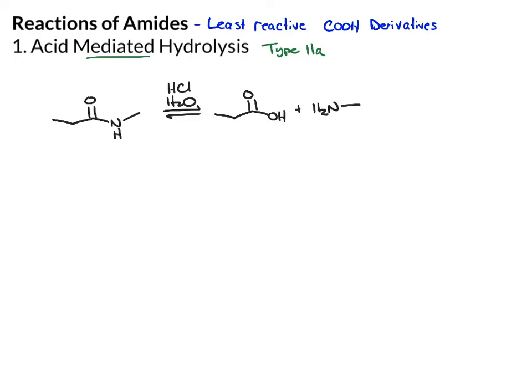The unusual thing about this on first glance is that if we look at these two things, the amide is more stable and the carboxylic acid is less stable. So how do we form something less stable out of something more stable? We always need to look for a driving force for this reaction.